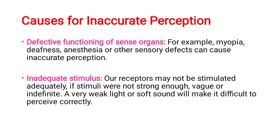Next, what are the causes of inaccurate perception? First is defective function of sense organs — for example, myopia or short sightedness, hypermetropia or long sightedness, deafness, anesthesia or loss of consciousness due to anesthetic agents, or other sensory defects may lead to inaccurate perception. Second is inadequate stimulus — the stimuli should be strong enough to produce a perception. If the stimulus is very weak, vague, or unclear, you may not be able to perceive it correctly. A weak light or soft sound is very difficult to perceive.